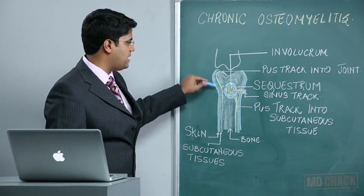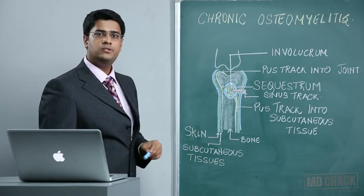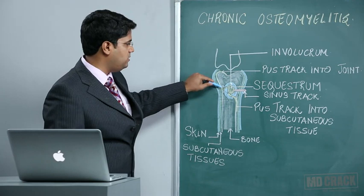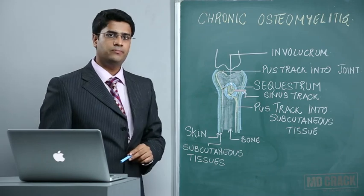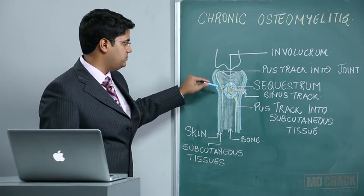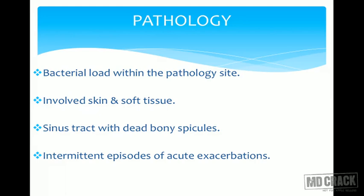The involucrum is new bone forming around the sequestrum — you can see the sclerotic area is the sequestrum with new bone formation around it. The sinus tract is always an essential component of chronic osteomyelitis. This must be kept in mind for MCQs: sequestrum is dead bone surrounded by granulation tissue, involucrum is new bone formation around it.